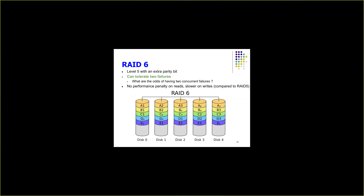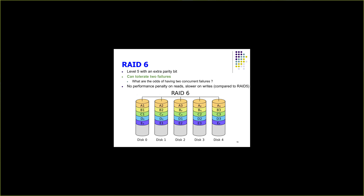RAID level 6 is similar to RAID level 5 but can sustain two failures instead of one. It stores two parity bits per stripe, which allows recovery from two concurrent errors. The probability of two simultaneous disk failures is very low, so RAID 6 provides very good reliability for almost all practical use cases. The trade-off is that write performance is slightly slower than RAID 5 since two parity bits must be written on every write.